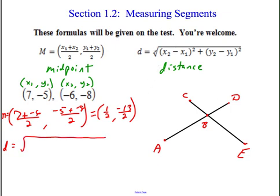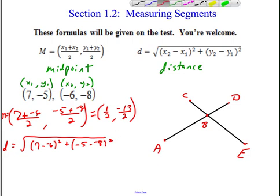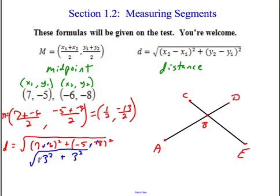Simplifying that midpoint: 7 plus negative 6 gives 1, so x is one-half; and y is negative thirteen-halves. Fractions are fine — you can make them a decimal if you want, just be careful with your signs. For distance, you use the distance formula: subtract your x's, so it's (7 minus negative 6) squared, plus (negative 5 minus negative 8) squared, all under a square root. Subtracting negatives: that's 13 squared plus 3 squared, which is 169 plus 9, giving the square root of 178.